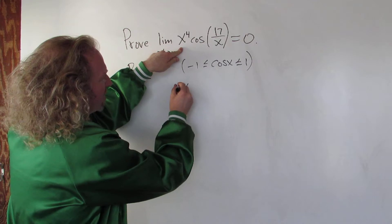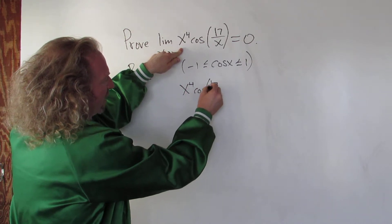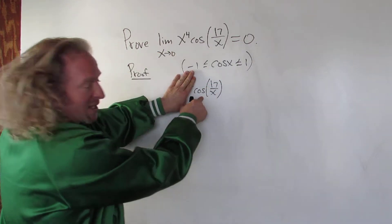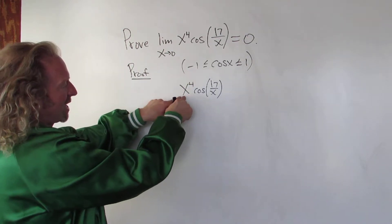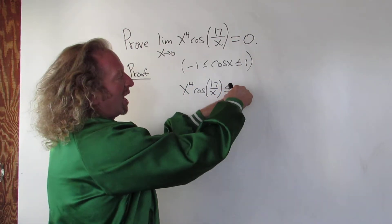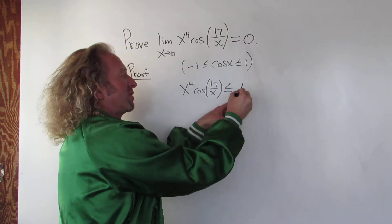So if you have x to the 4th times the cosine of 17 over x, well this is less than or equal to 1. And then this x to the 4th is hanging out. So it's less than or equal to x to the 4th times 1, just x to the 4th.